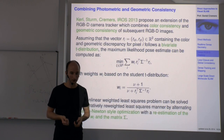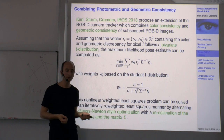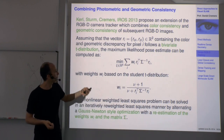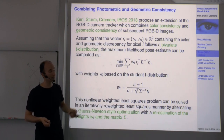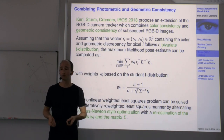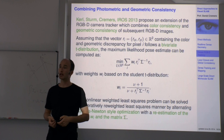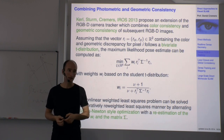Combining color and depth consistency in this way gives, to our knowledge, the currently most accurate algorithm to track a Kinect camera.